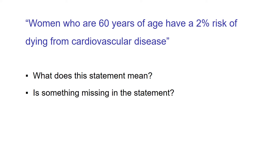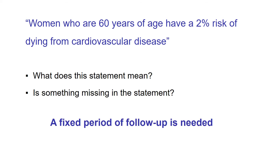Consider this example: women who are 60 years of age have a 2% risk of dying from cardiovascular disease. What does this statement mean? Is something missing? Yes — a fixed period of follow-up is needed. We need to tell whether they are at risk over the next 5 years or 10 years. Maybe over the next 50 years the risk will be close to 100%. So we need to mention a fixed period of follow-up.